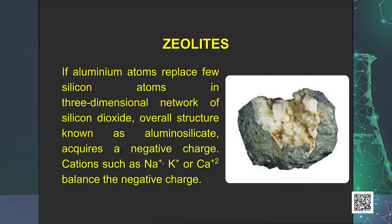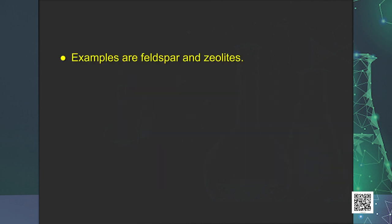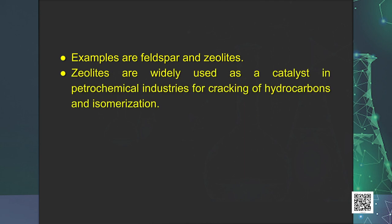Next, one of the very important compounds we will learn about is zeolites. If aluminum atom replaces few silicon atoms in three-dimensional network of silicon dioxide, overall structure known as aluminosilicate acquires a negative charge. Cations such as Na+, K+, or Ca2+ balance the negative charge. Examples are feldspar and zeolites.